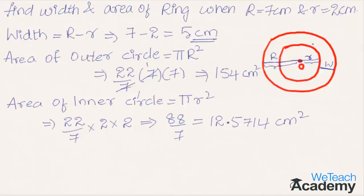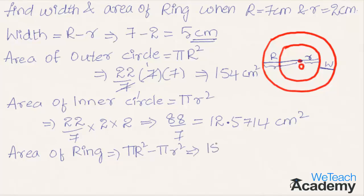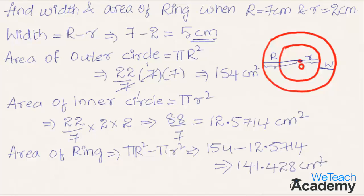Now, the area of the ring is the area of the outer circle minus the area of the inner circle. Substituting both areas, we get 154 minus 12.5714 cm². Subtracting, we get 141.428 cm² as the area of the ring.